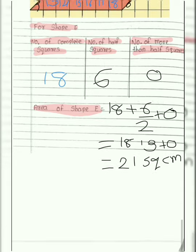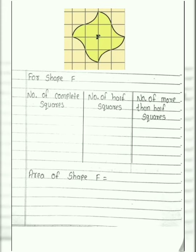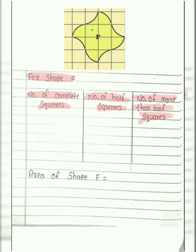Our next shape is shape F. Pay attention here. We will start with the statement for shape F and draw 3 columns: number of complete squares, number of half squares, and number of more than half squares. We count complete squares: first, second, third, and fourth — 4 complete squares. We write 4.